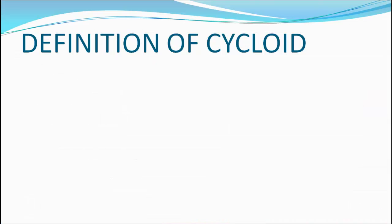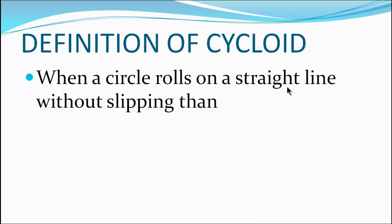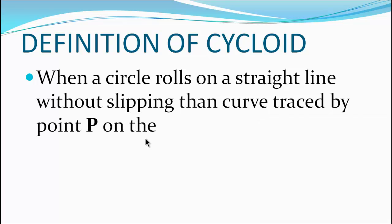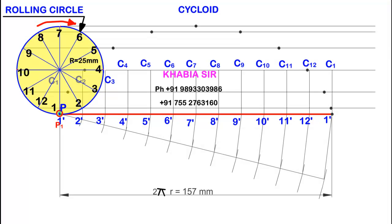Let us understand the definition of cycloid. When a circle rolls on a straight line without slipping, then the curve traced by point P on the circumference of the rolling circle is called a cycloid. I am drawing a real cycloid in front of you.